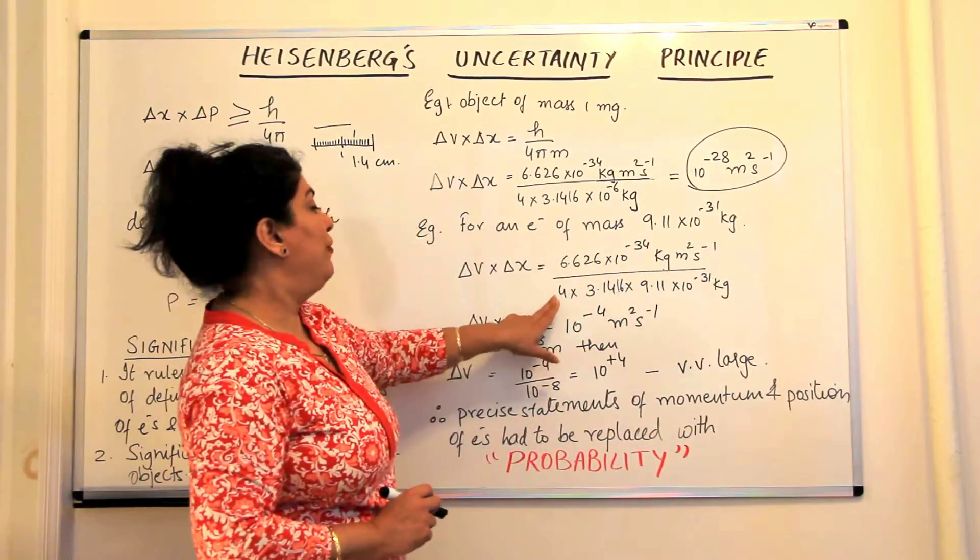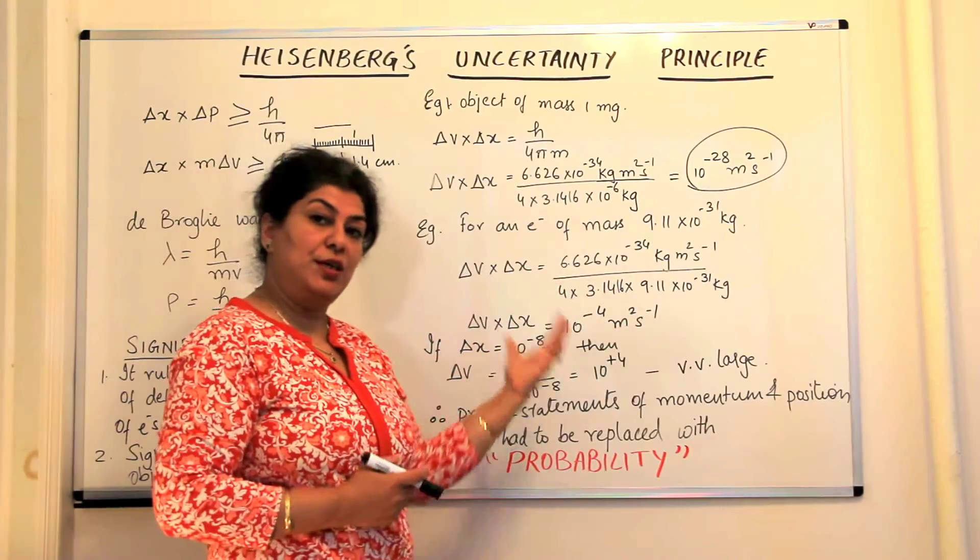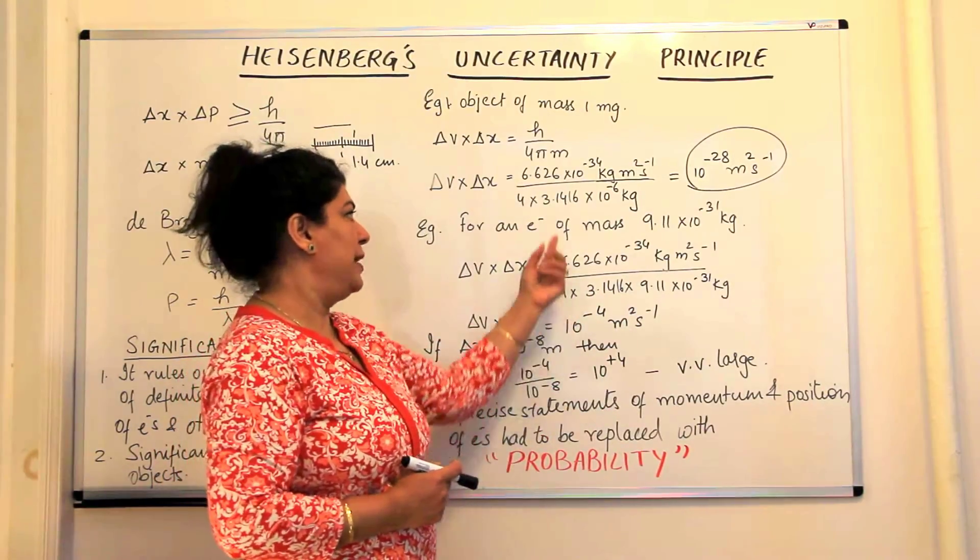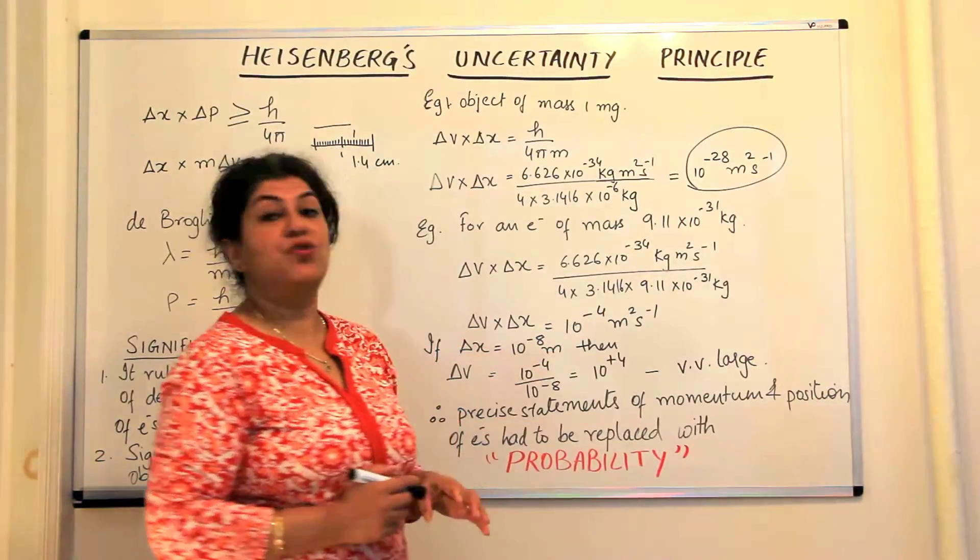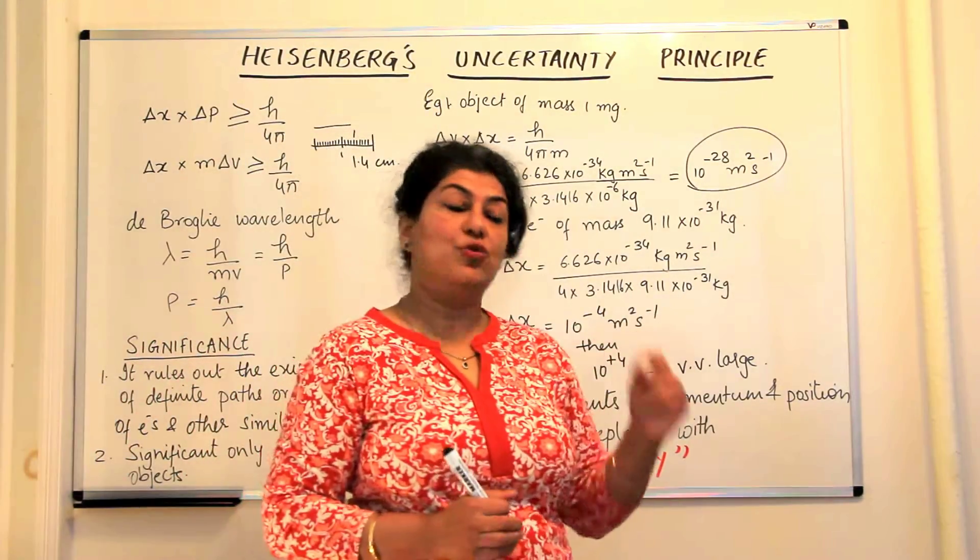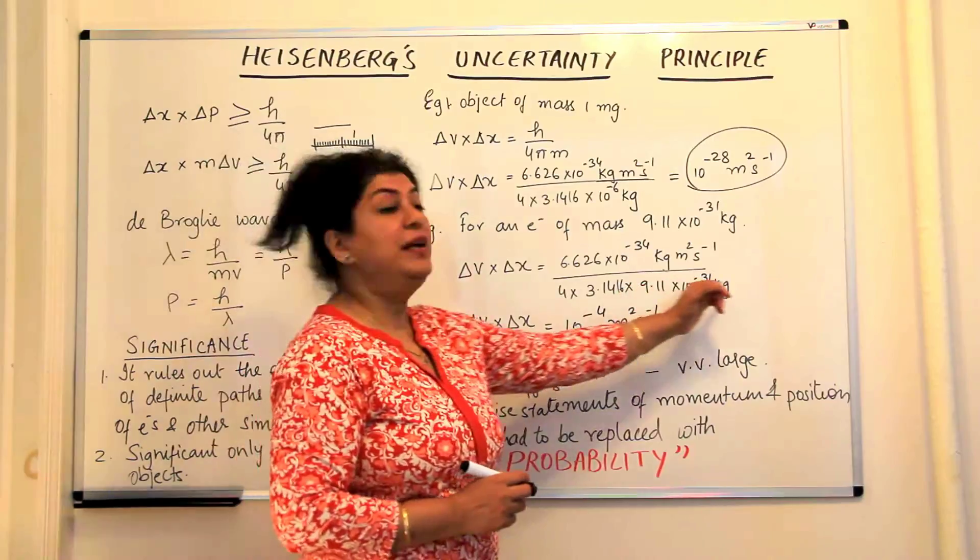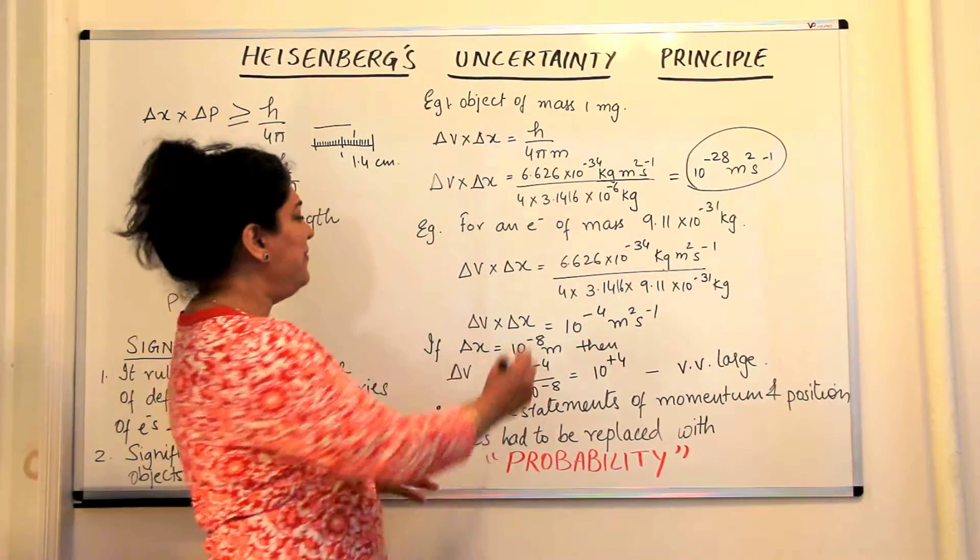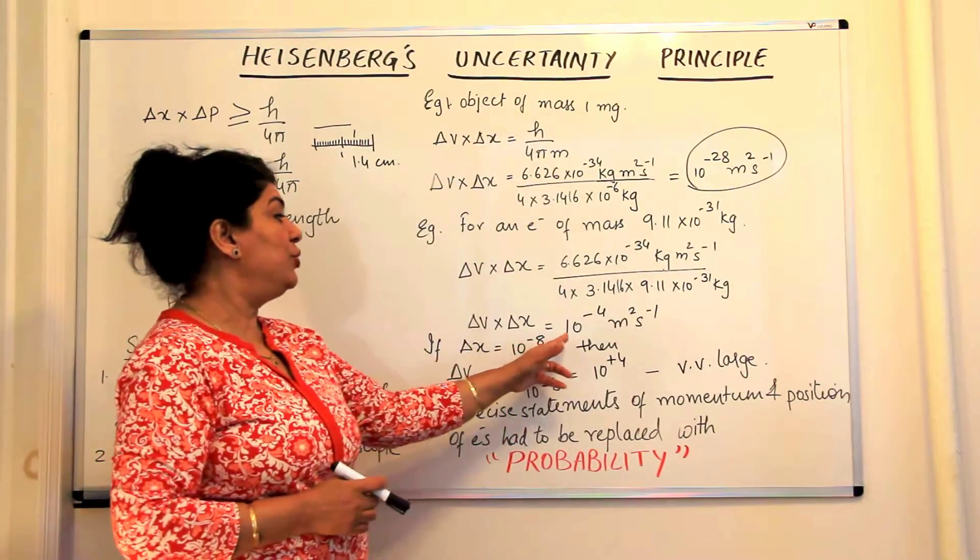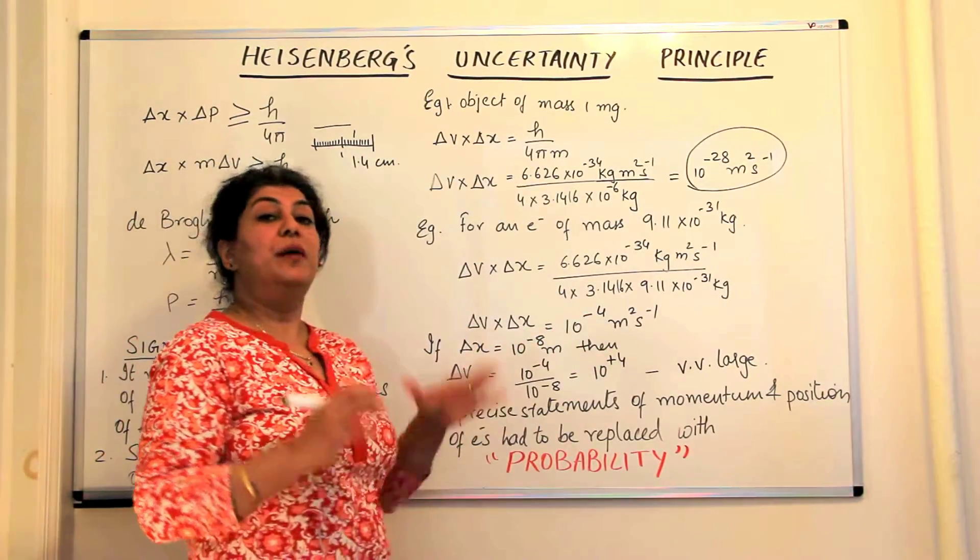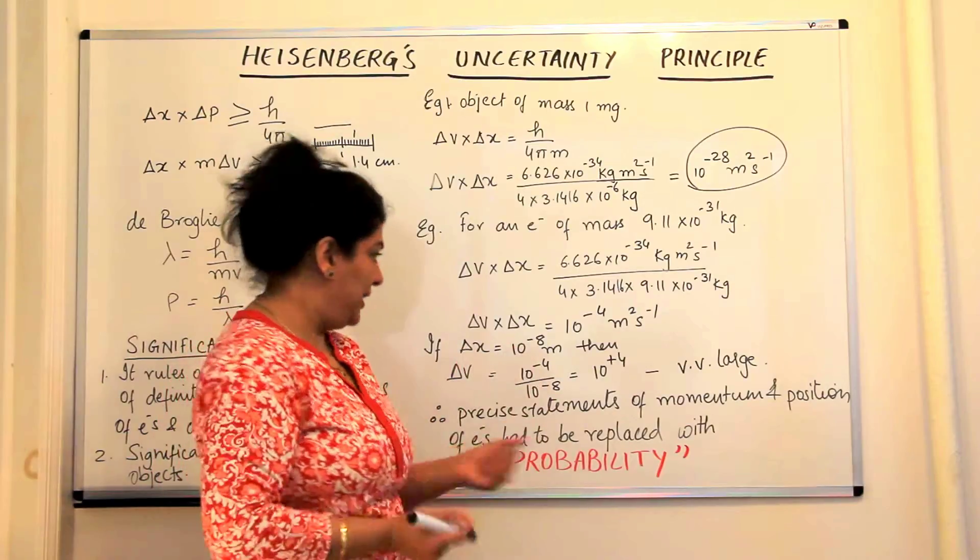upon 4 times 3.1416, the value of pi, times the mass of an electron, 9.11 times 10 to the power minus 31 kg. When we carry out the calculations, we find the product of the two uncertainties equals 10 to the power minus 4 meter square second inverse.